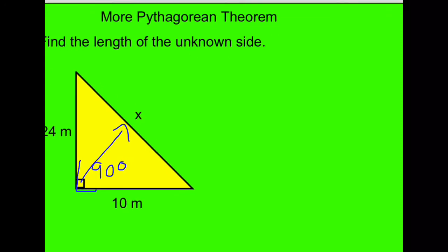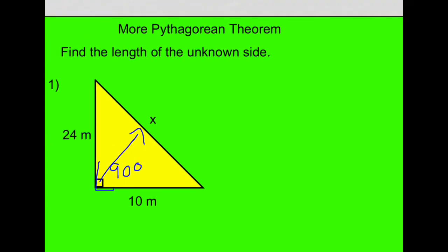So the Pythagorean theorem says, for right triangles only, if you take the square of the hypotenuse, so if you take x squared, that will equal the sum of the squares of the two legs. So in this case, one leg is 24, and we square that. So 24 squared, and we add on the other leg squared, plus 10 squared.